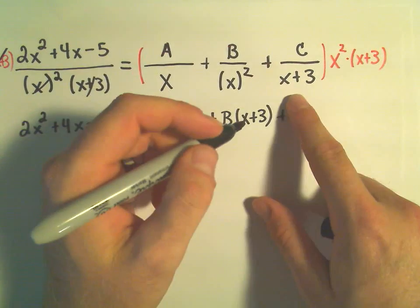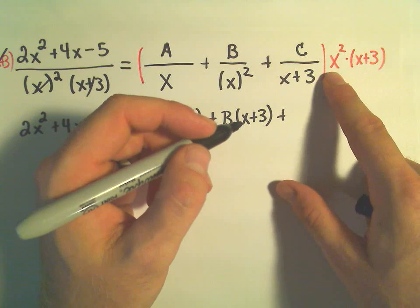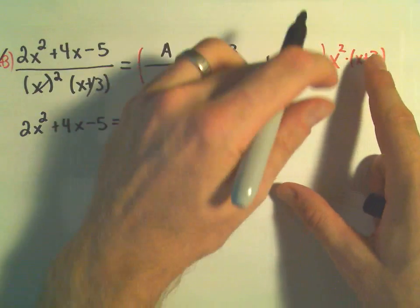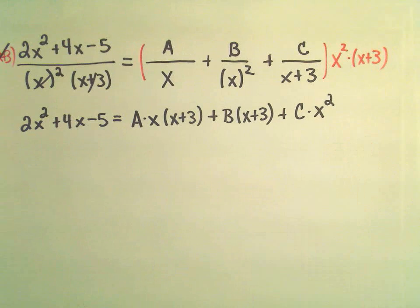And then when we multiply the x plus 3, x plus 3 squared, x plus 3 times x squared to our third term, the x plus 3s will cancel. And we'll be left with C times x squared.